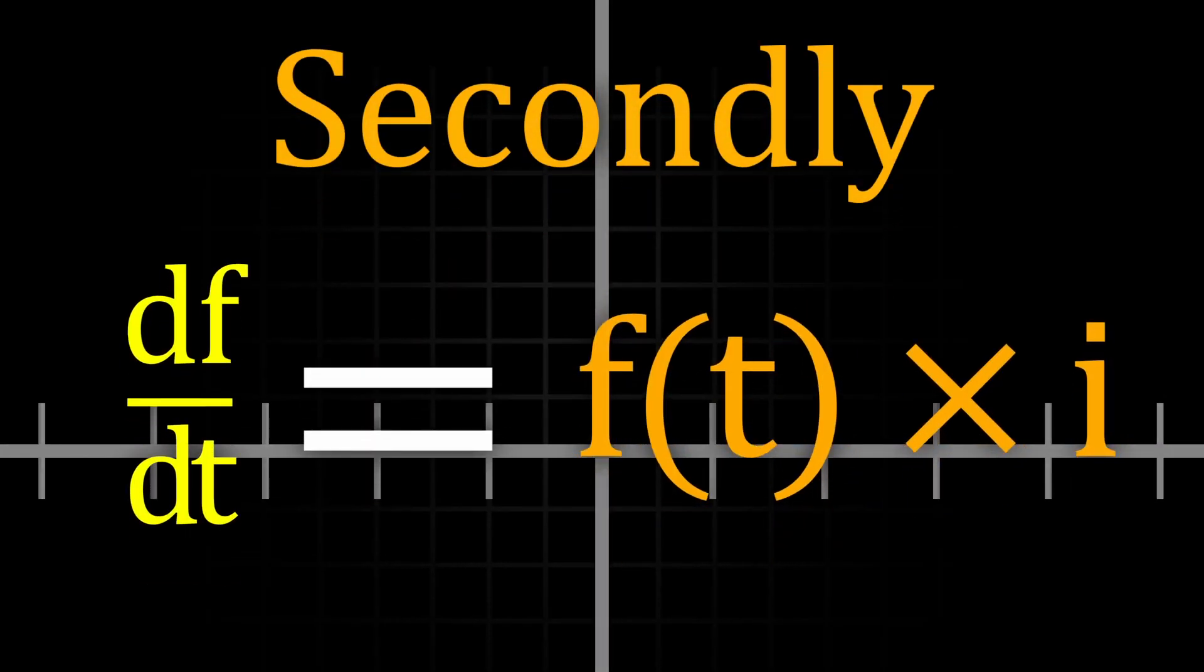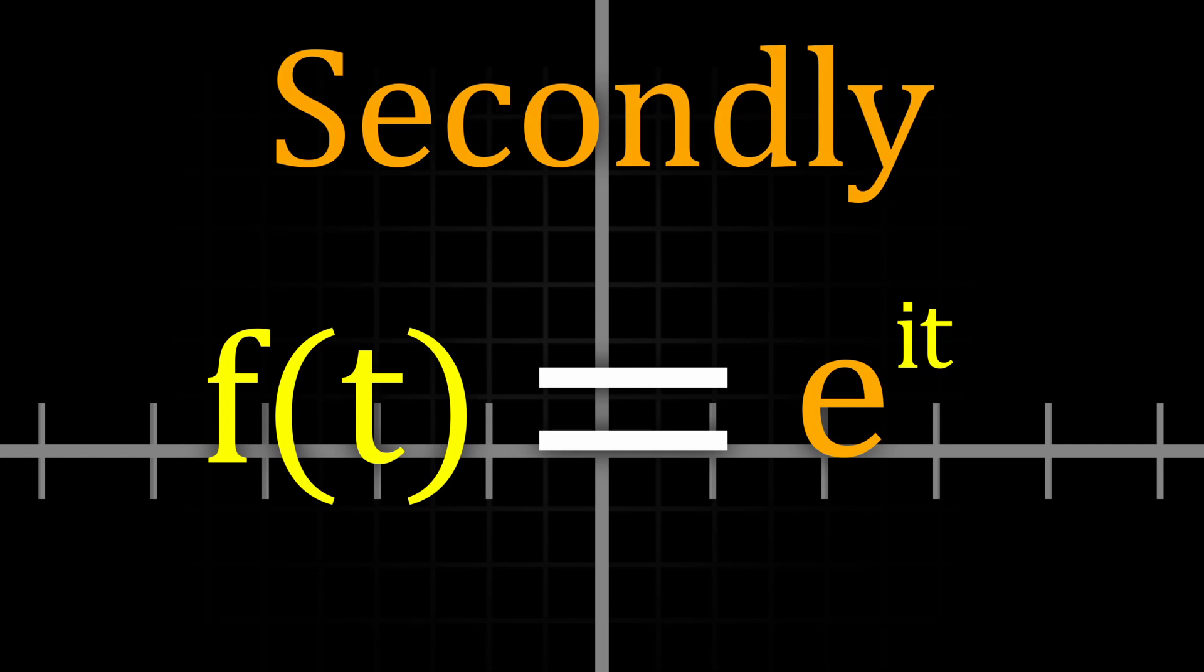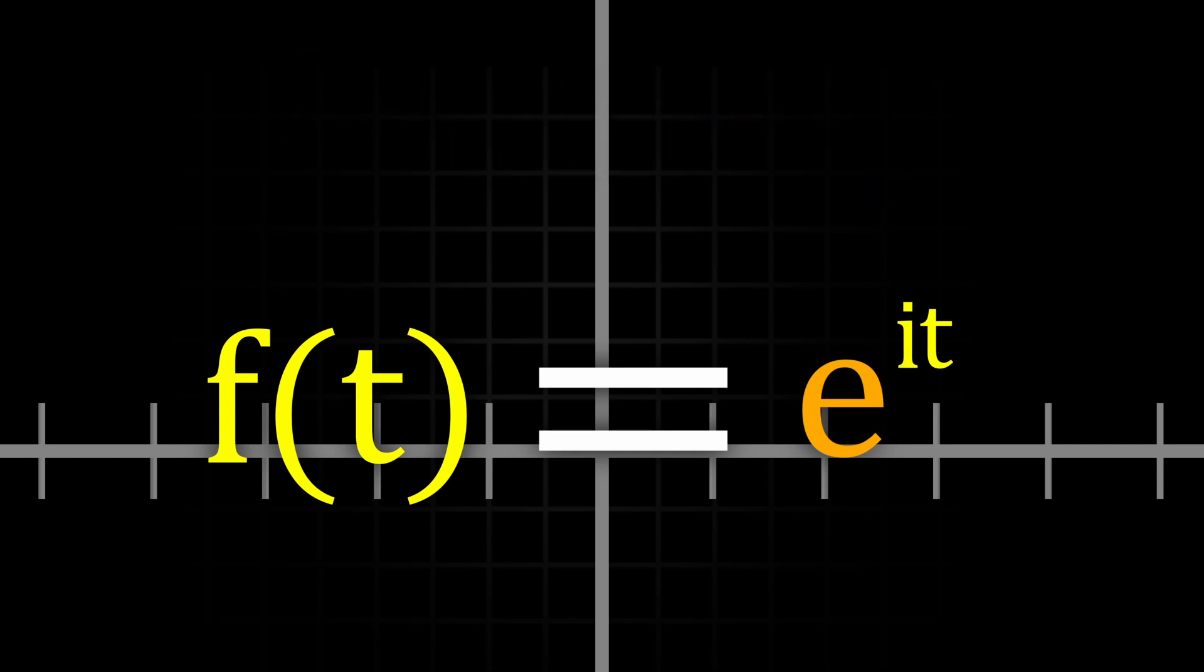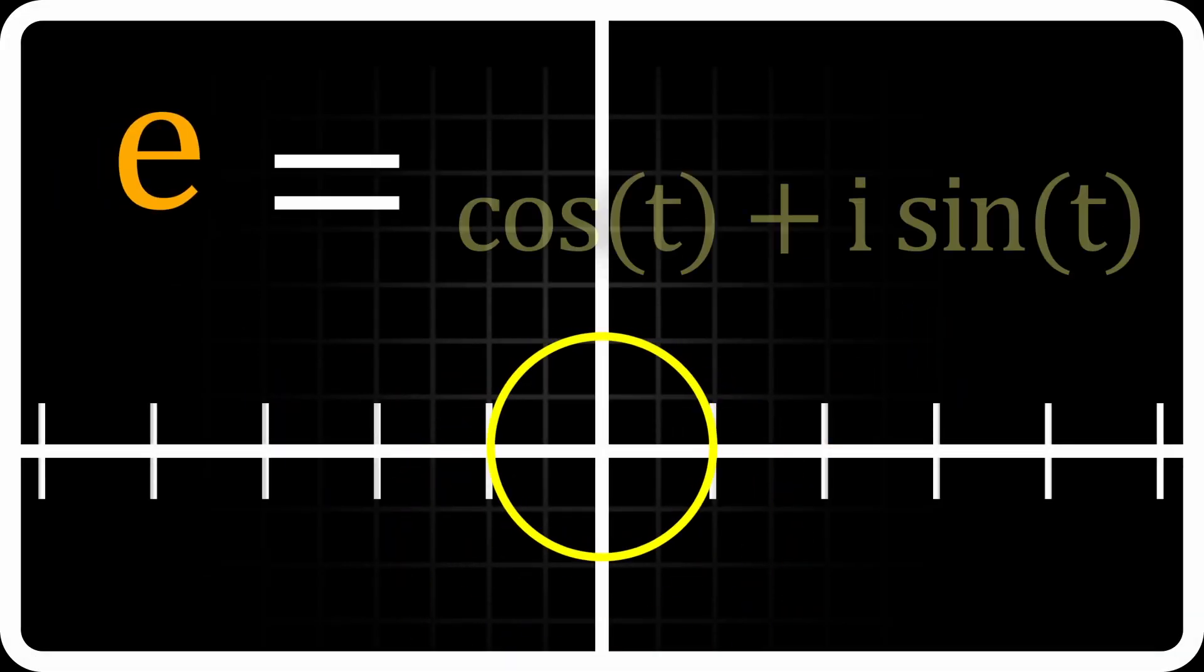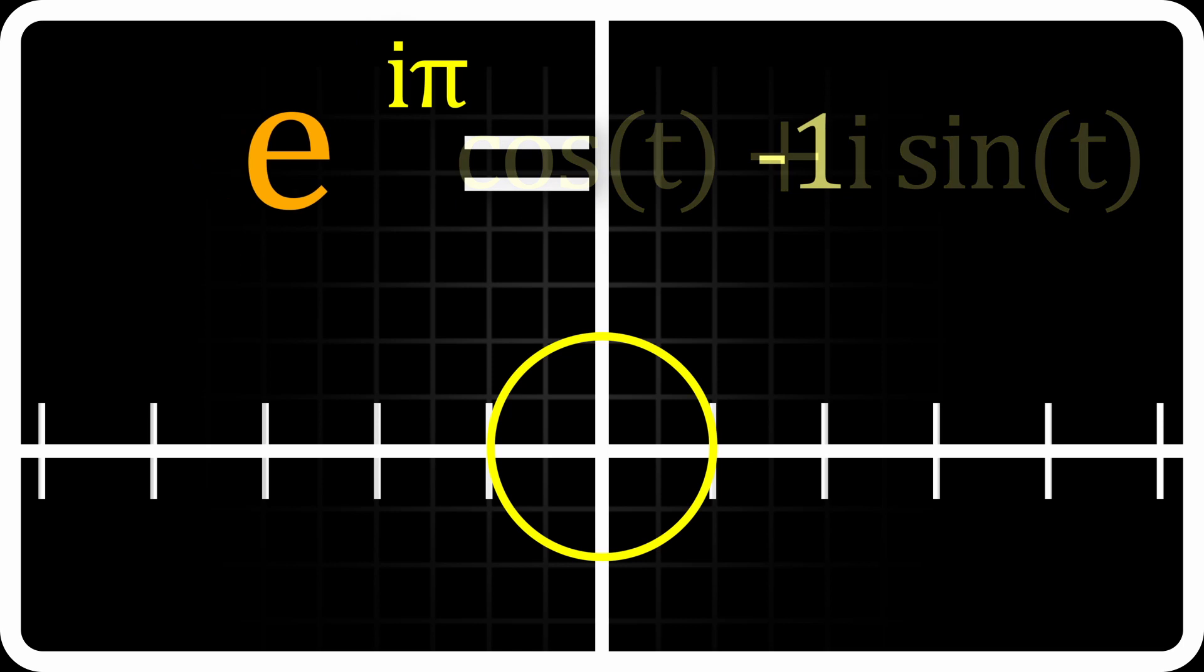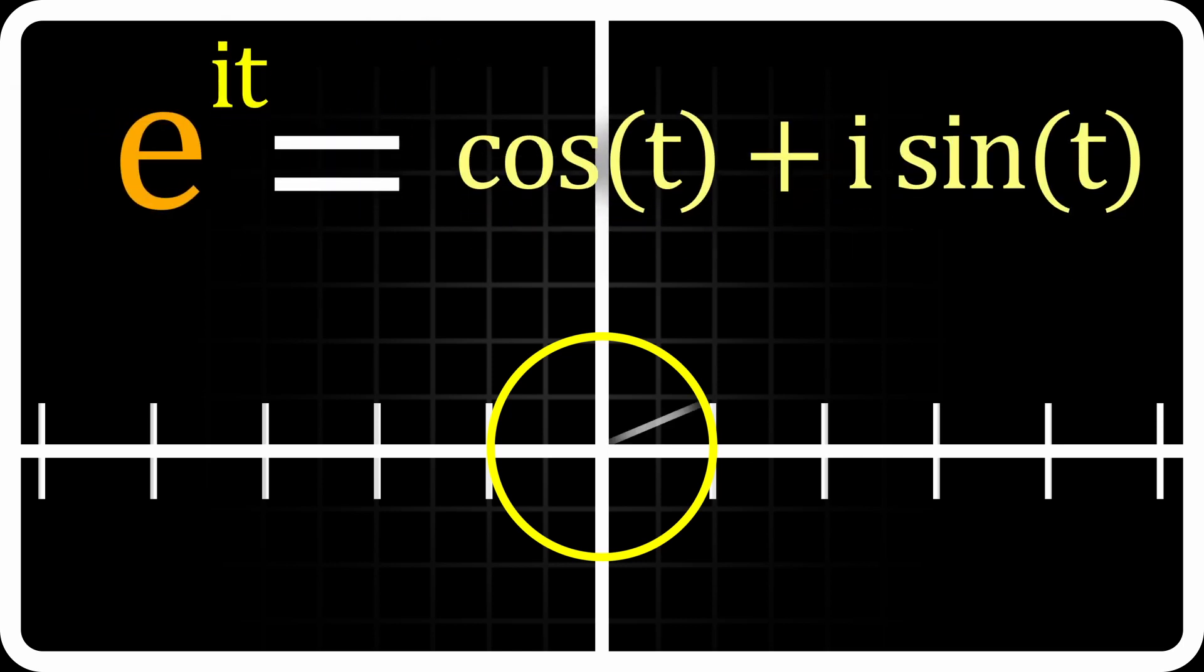Secondly, we can use some basic differential equations to derive a wonderful expression, one that you likely already know if not at least heard of. Euler's formula. Also occasionally written like this, the equation states that e to the i t leads to a value of a point rotated anticlockwise t degrees with a radius of 1.